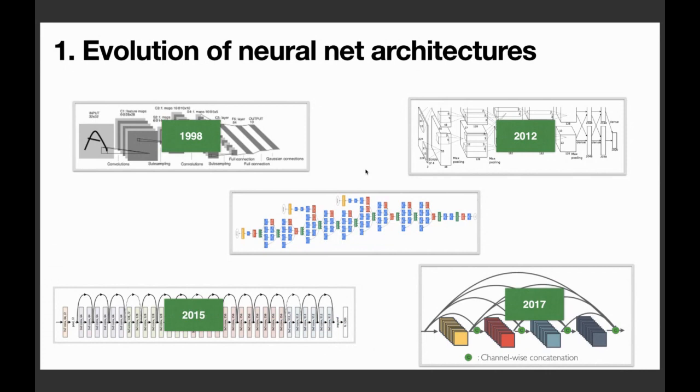ResNet is viewed as this breakthrough in depth which allows us to train neural networks with more than hundreds of layers, which is incredible. And the last one, DenseNet, which was developed by my colleagues back at Cornell, received the CVPR best paper award two years ago.